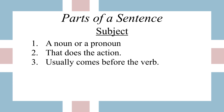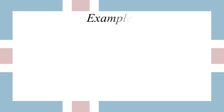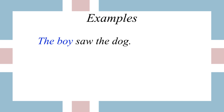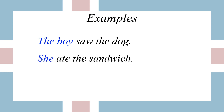You identify the subject by asking: what is doing the verb? For example: 'The boy saw the dog' — who's doing the seeing? The boy. The boy is the subject. 'She ate the sandwich' — who ate it? She is doing the eating, so she is the subject. 'It is cold' — what is cold? What's doing the being? It. We don't know what that's referring to, but we know that it is the subject.